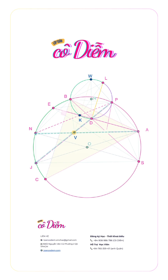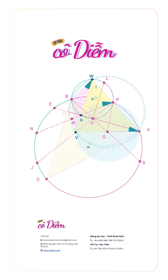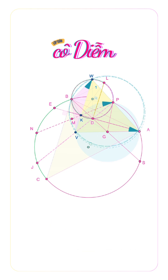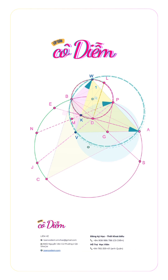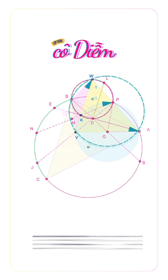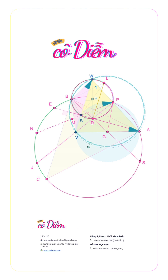Let O and R be the centers of circles omega and gamma respectively. Draw diameter WD of circle gamma. Let G be the midpoint of AB. We will prove that D is the orthocenter of triangle WAV, and that AK and BP are its altitudes — which gives that GP and GK are tangent to circle gamma. We will also prove that B is the intersection of circle gamma and the circumcircle of WAV, different from W, which gives B, D, G are collinear.